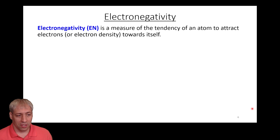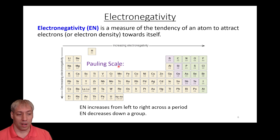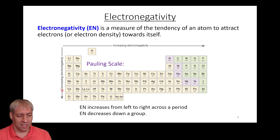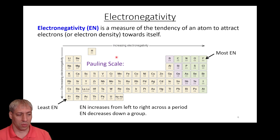Electronegativity is a measure of the tendency of atoms to attract electrons. We have various different systems for describing electronegativity. The Pauling scale is probably the most commonly used — it puts a number on electronegativity. You can see a trend on the periodic table: electronegativity increases as you go toward fluorine, and decreases as you go toward francium. Fluorine is the most electronegative atom at 4, oxygen is 3.5, hydrogen is 2.1, and carbon is 2.5.